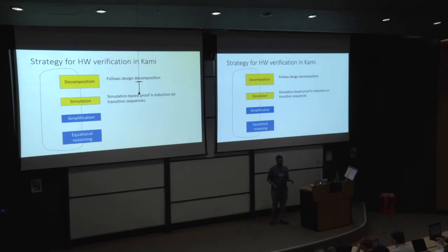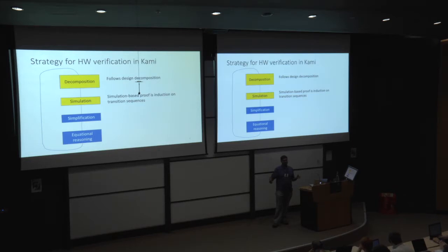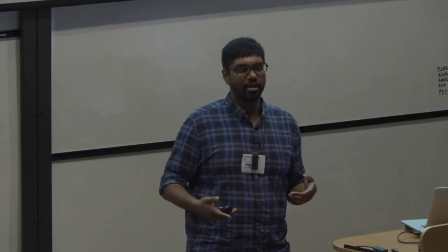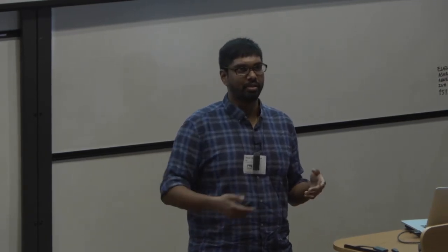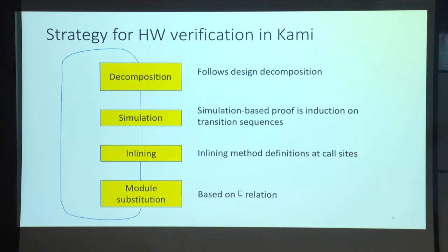Inlining is necessary because if you have multiple modules, the state transition is spread across them: if a rule invokes a method in another module, you have to separately consider the rule and the method. If you combine the modules — taking the union of states, rules, and methods — it becomes easier to analyze. We have a theorem stating that inlining the method definitions into rule bodies produces the same trace as the original composition. Finally, instead of equational reasoning, we have module substitution based on the implementation relation.